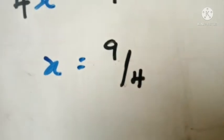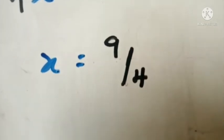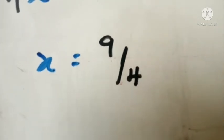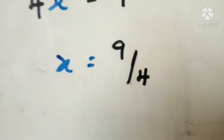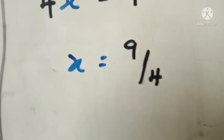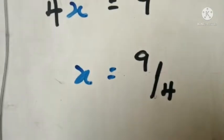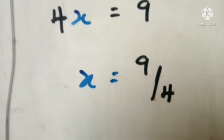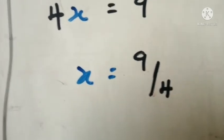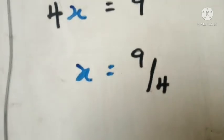After solving, x is equal to 9 over 4. Once again, if you get a different answer, comment down below for corrections. Thank you for watching — if you got some value from this video, don't forget to subscribe to our YouTube channel for more content like this.